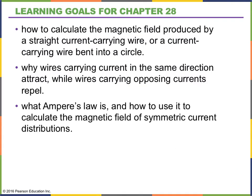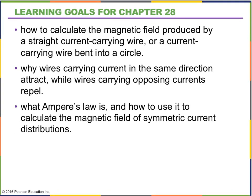Let's continue with chapter 12. In the previous video, we looked at how to find the magnetic field produced by a long straight current-carrying wire. In this video, we're going to look at a wire carrying current in a circle, and also how wires that carry current in the same direction attract each other, while wires with current in the opposite direction repel.